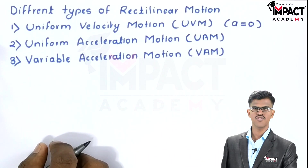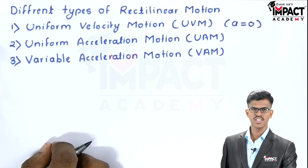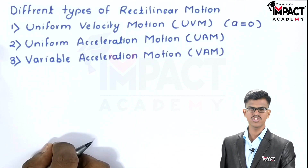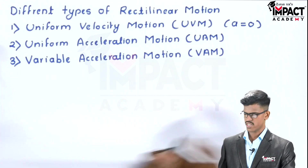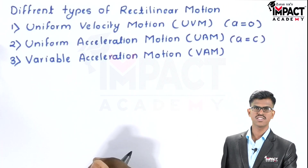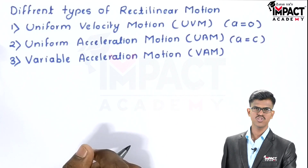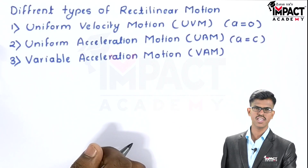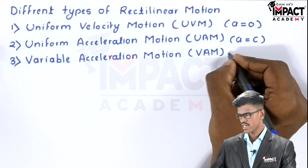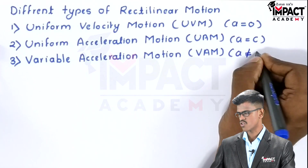Second is uniform acceleration motion. In this motion, the speed of the particle changes with time constantly. Here, acceleration is constant. Third is variable acceleration motion. In this motion, the acceleration of the particle changes with time. Here, acceleration is not constant.